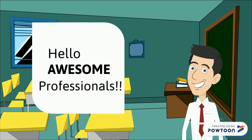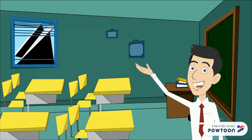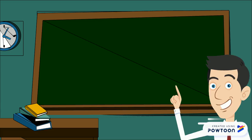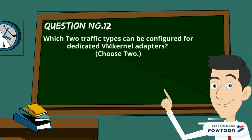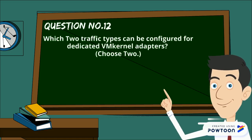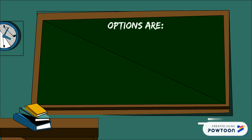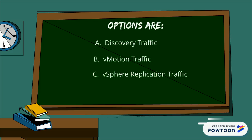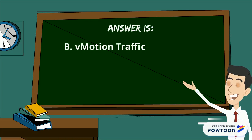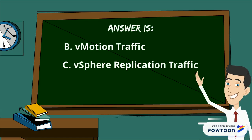Hello, awesome professionals! Welcome to VMware questionnaire-based learning forum. Here is question number 12: which two traffic types can be configured for dedicated VM kernel adapters? Choose two options. Your options are: A) discovery traffic, B) vMotion traffic, C) vSphere replication traffic, D) vSphere custom traffic. The answer is B) vMotion traffic and C) vSphere replication traffic.